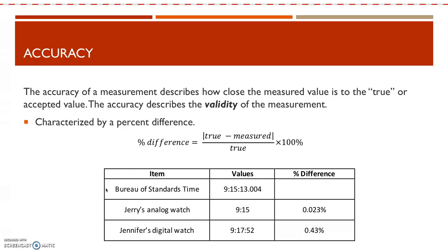Accuracy, however, is about describing how close your measured value is to the true value or the accepted value. Accuracy describes the validity of the measurement — is this a valid measurement? In general chemistry lab, we typically characterize accuracy using a percent difference, which tells you how far your measured average is from the true value. Using the same watch data, Jerry's watch, even though it is less precise, is much more accurate than Jennifer's digital watch.